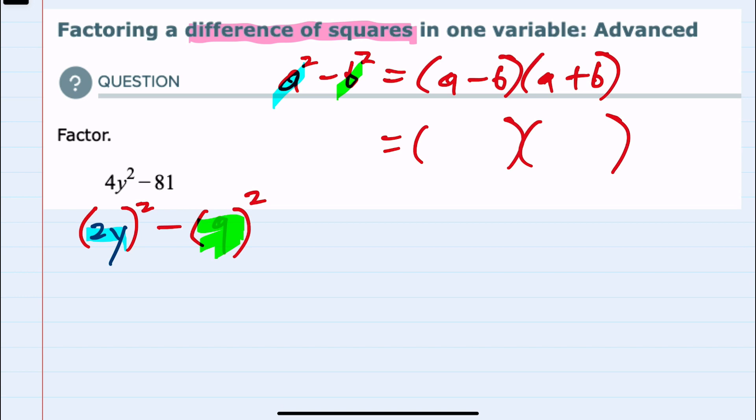We would have a minus b where a is now 2y minus b which we have identified as 9. And then the second part is again 2y plus 9. So we have factored and have 2y minus 9 times 2y plus 9.